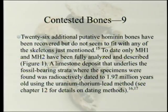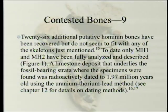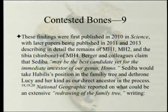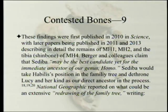A limestone deposit underlying the fossil-bearing strata was radioactively dated to 1.9 million years old using the uranium-thorium-lead method. These findings were first published in 2010 in Science, with later papers in 2011 and 2013 describing in detail the remains of MH1, MH2, and the tibia of MH4. Berger and colleagues claimed that sediba may be the best candidate yet for the immediate ancestor of our genus Homo.